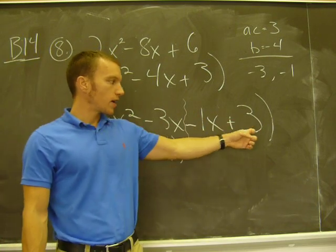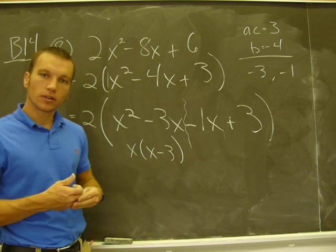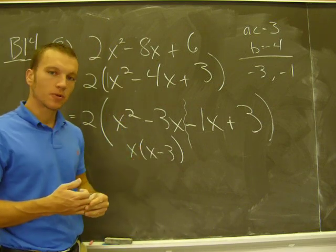And then the greatest common factor out of these two guys. Now they don't have a common factor, 1x and 3. They don't have a common factor, but I can always factor out a 1 in order to complete this process.